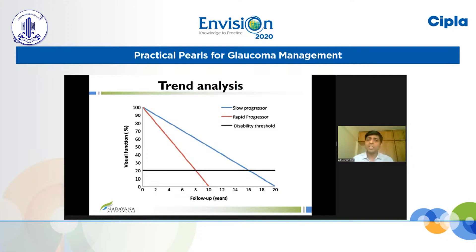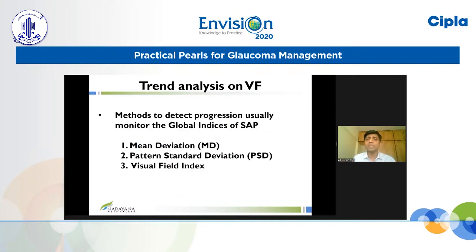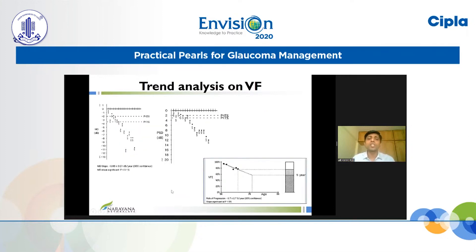The first analytical method is trend analysis, where the change in a parameter over time is analyzed and a slope is provided. This tells us at what rate a particular parameter is changing over time and whether that change is happening at a rapid or slow pace. On visual fields, trend analysis is used for global indices like mean deviation, pattern standard deviation, and the VFI. In these plots, the MD, PSD, and VFI are plotted over time at each visit, and the slope of change is provided. As you can see, the MD slope is minus 0.8 decibels per year and the slope is significant. The more popular one nowadays is the VFI slope.